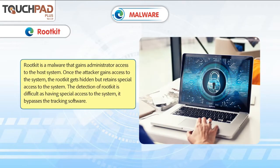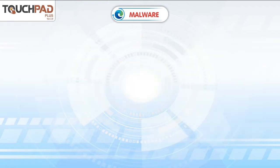Rootkit: A rootkit is malware that gains administrator access to the host system. Once the attacker gains access, the rootkit gets hidden but retains special access to the system. The detection of a rootkit is difficult as it bypasses the tracking software.